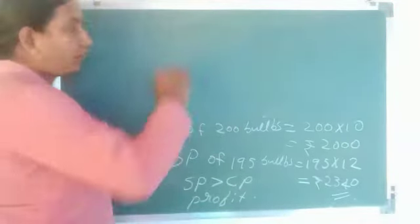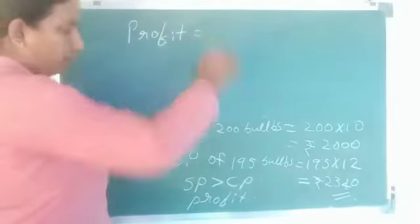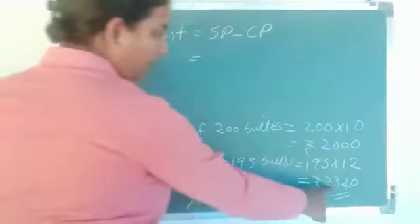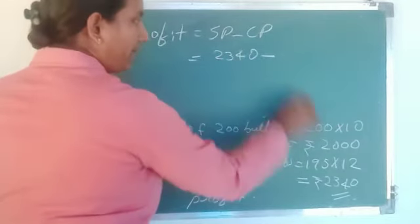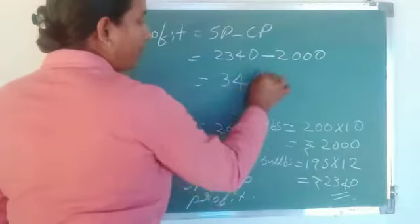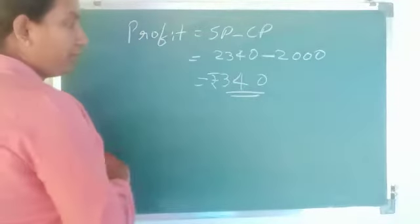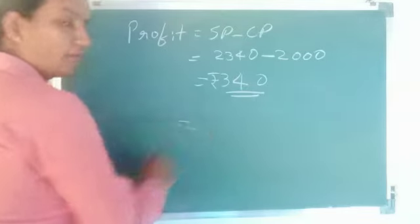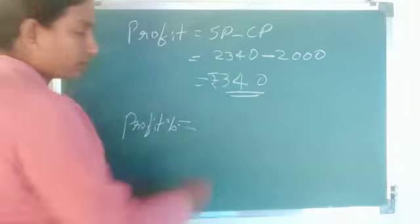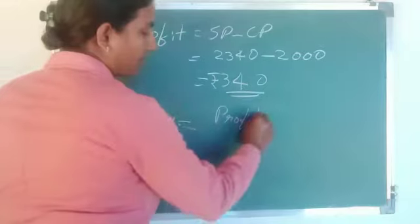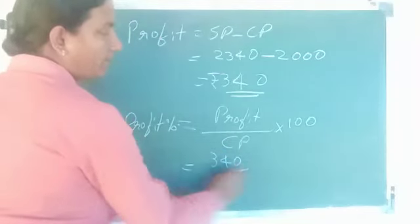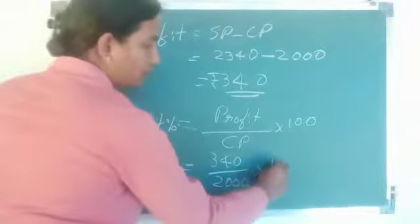SP is greater than CP, so he made a profit. Therefore profit equals SP minus CP: 2340 minus 2000, which is 340 rupees. Now we need to find profit or gain percentage, which equals profit divided by CP into 100. Profit is 340, CP is 2000, into 100.